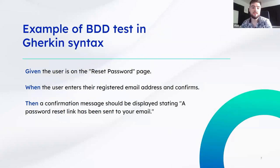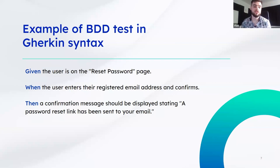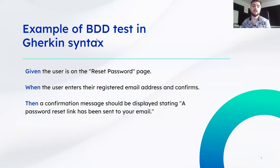This is an example of Gherkin syntax. BDD tests are written in a human-readable format. SpecFlow also uses Gherkin syntax. It has three parts: Given, When, and Then. If you're familiar with unit testing as a developer, there's a common pattern: arrange, act, assert — this is pretty much the same but written in human-readable language. In the Given part you define preconditions, for example the user is navigated to a reset password page. The When step is the action — when the user enters their email address and confirms. And the Then step is the verification where you do your assertions.